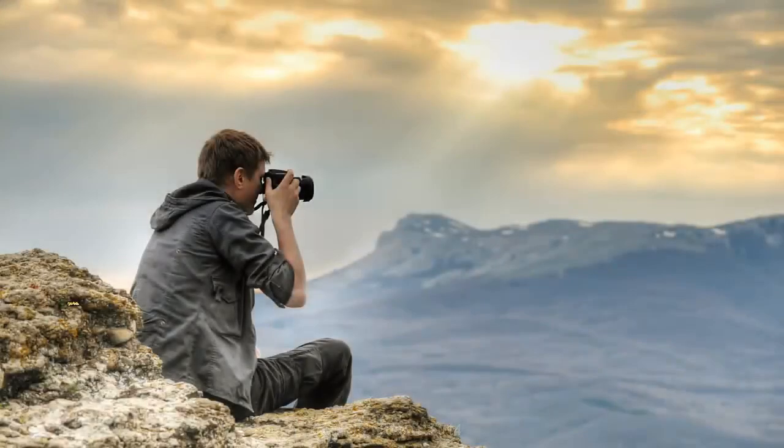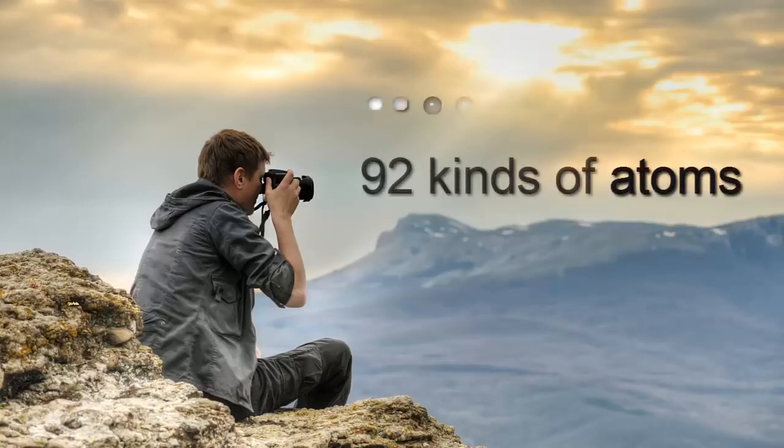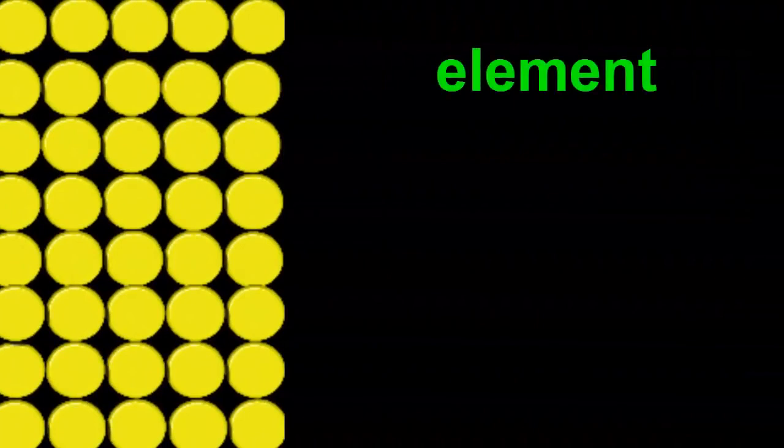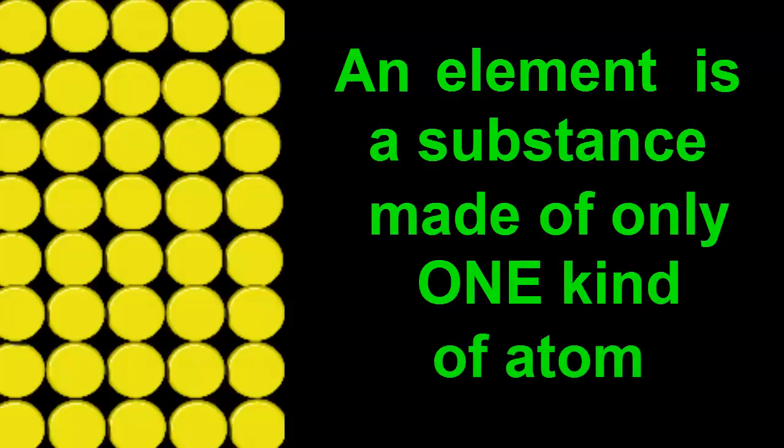In the first video we saw that all the things in the world are made of incredibly tiny particles called atoms. And also that there are 92 different kinds of them. Most things have more than one kind of atom in them, but this nugget of pure gold contains only gold atoms. So we call it an element. An element is a substance made of only one kind of atom.